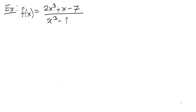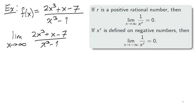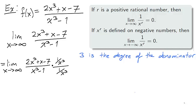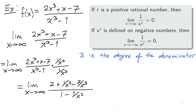This reasoning is supported by calculus. Take for example the rational function (2x³ + x − 7) divided by (x³ − 1). The limit as x approaches infinity for f of x can be calculated by multiplying 1 over x to the r throughout the top and bottom of the expression. Since 3 is the degree of the denominator, we multiply the top and bottom by 1 over x cubed. Distributing gives us an expression where the terms circled in red approach 0 as x approaches infinity, so the limit is 2 — the ratio of the leading coefficients, 2 over 1.